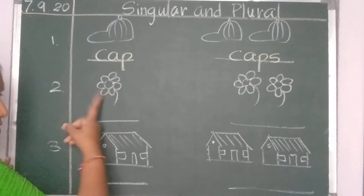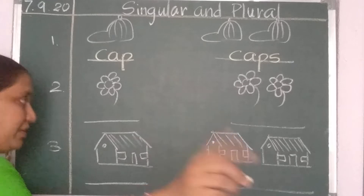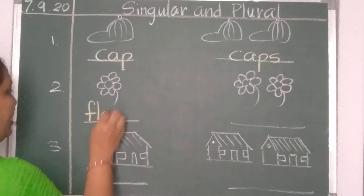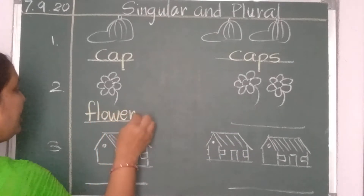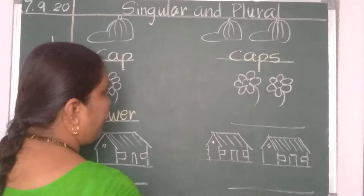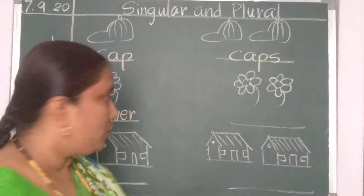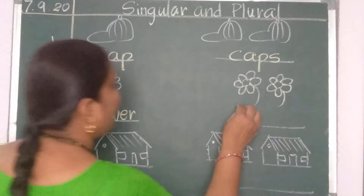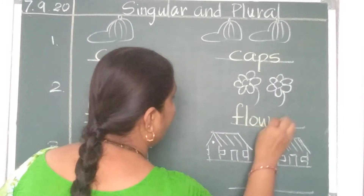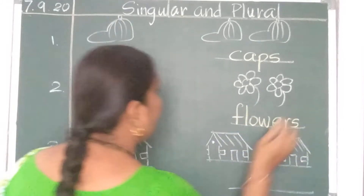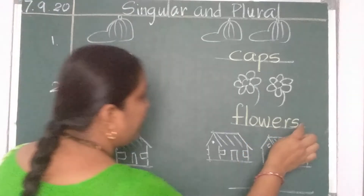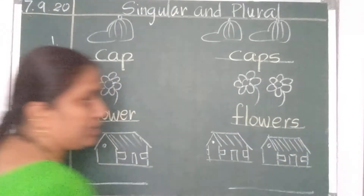Like that, only one single flower is there. So flower, F-L-O-W-E-R, flower. But here how many flowers are there? Two. So flowers, F-L-O-W-E-R-S. The same spelling you should write, you should add S to it.